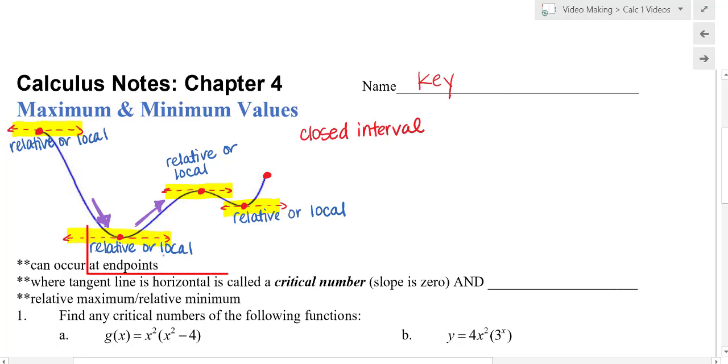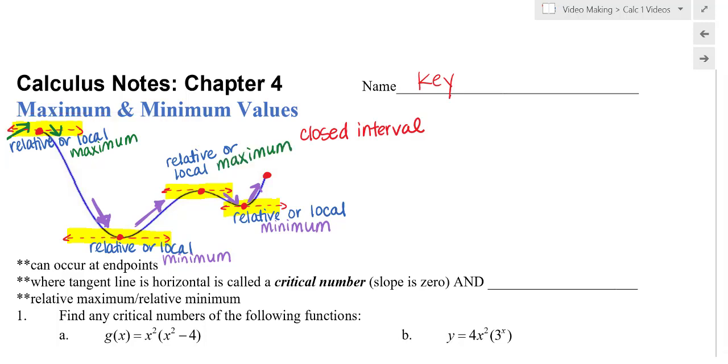A relative or local minimum is defined as where a function is decreasing, then it turns around and increases. So this would be a relative or local minimum, as well as this point over here, because we're decreasing and then turning around and increasing. Now, a relative or local maximum is defined as a point who is increasing, then turns around and decreases. And so I can see that by increasing to it and decreasing after.